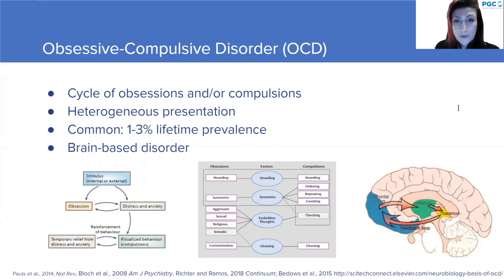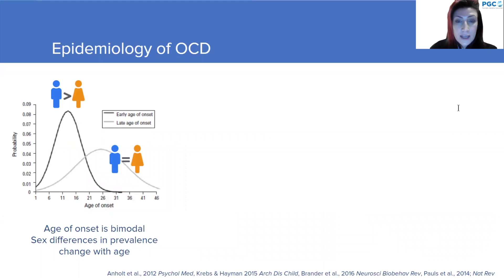OCD is considered to be a common disorder with a lifetime prevalence between one and three percent. It's also thought to be a brain-based disorder with a lot of converging evidence coming from neuroimaging, genetics, and preclinical work, with the cortical striothalamic circuit being one of the main pathophysiological mechanisms that has been implicated.